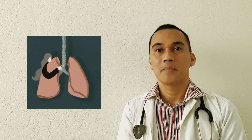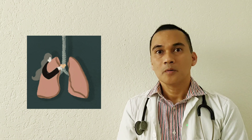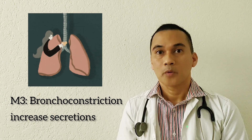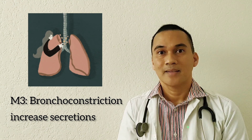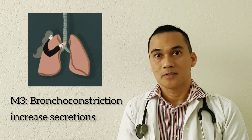So what does M3 do to the lungs? It's the opposite of B2. When we say B2 bronchodilates, M3 bronchoconstricts and increases bronchial secretions.